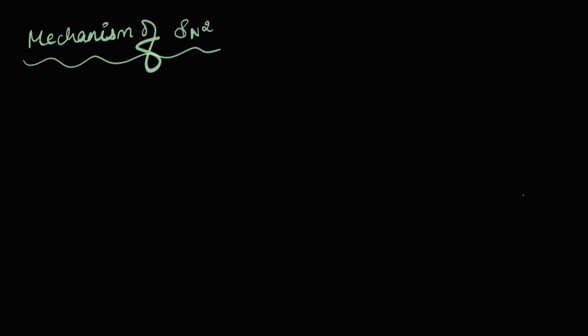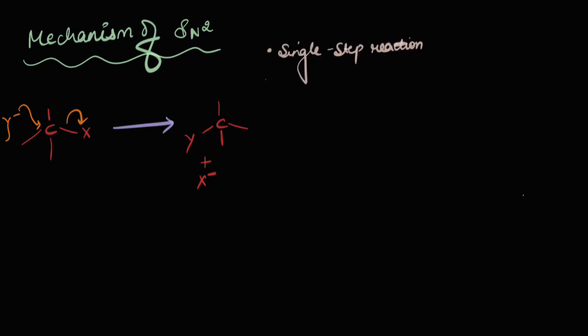Today we will be talking about the effect of a substrate on the rate of an SN2 reaction. Before we begin, let's recall the mechanism of an SN2 reaction. In this reaction, let's say X is the leaving group. The incoming nucleophile Y⁻ attacks and X⁻ leaves simultaneously. It's a single step reaction, and since it's a single step reaction, there's no intermediate for it.